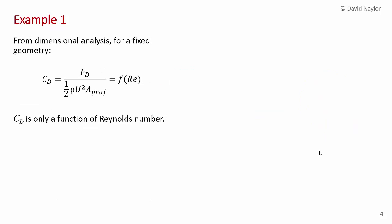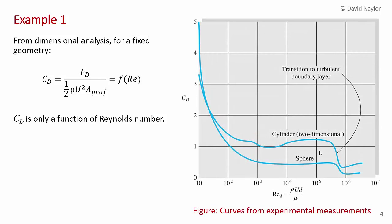From the dimensional analysis covered earlier in chapter five, the drag coefficient — the dimensionless parameter of drag force over one-half rho u squared times A — is just a function of the Reynolds number once you fix the geometry. For a sphere, the drag coefficient is only a function of the Reynolds number.